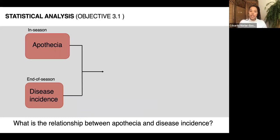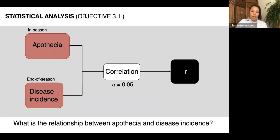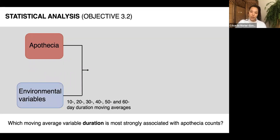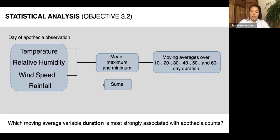Next I'll examine the relationship between apothecia observed during the growing season and disease incidence level at season's end, using correlation analysis. Then, since I have three different row spacings at the research sites, I'll assess the effect of row spacing on apothecia formation using an analysis of variance (ANOVA). For environmental variables, I'll generate mean, maximum, and minimum values for temperature, relative humidity, and wind speed, computing moving averages over durations from 10 to 60 days.